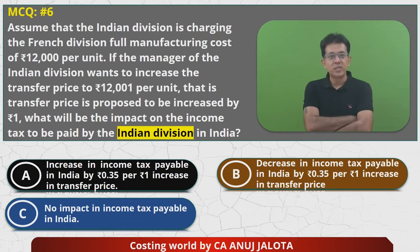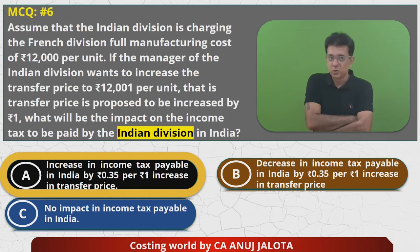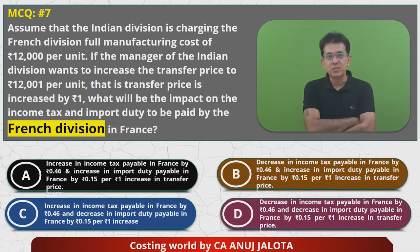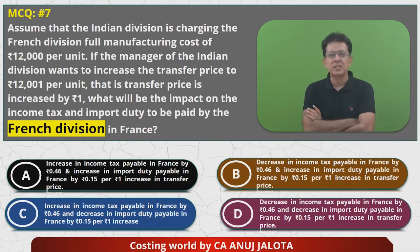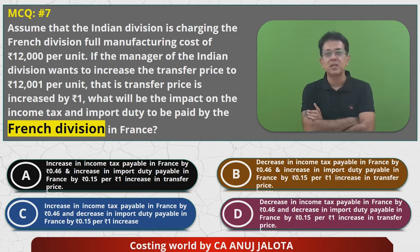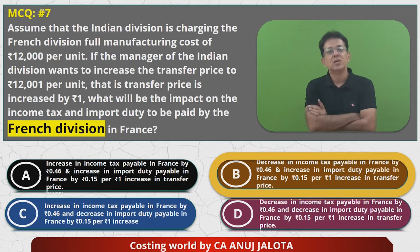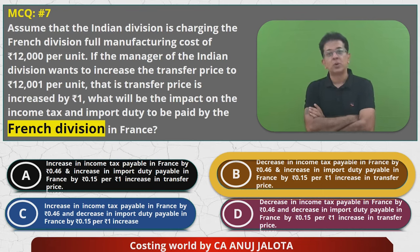So MCQ 6 answer: income tax will increase by ₹0.35 — answer is A. MCQ 7 answer: decrease in income tax by ₹0.46 and increase in import duty payable by ₹0.15 — that is option B. MCQ 7 is done. Now let's move to MCQ 8.